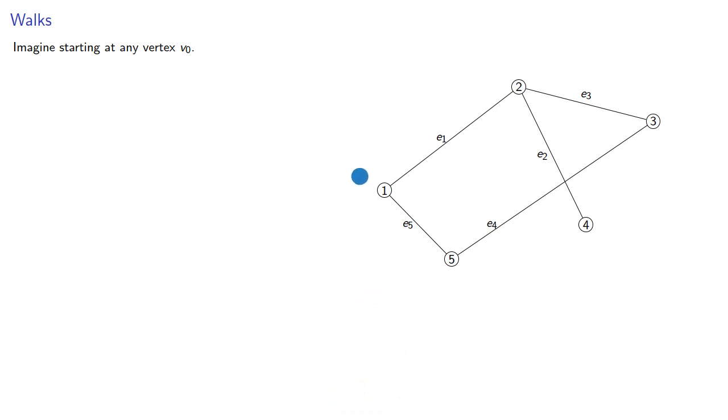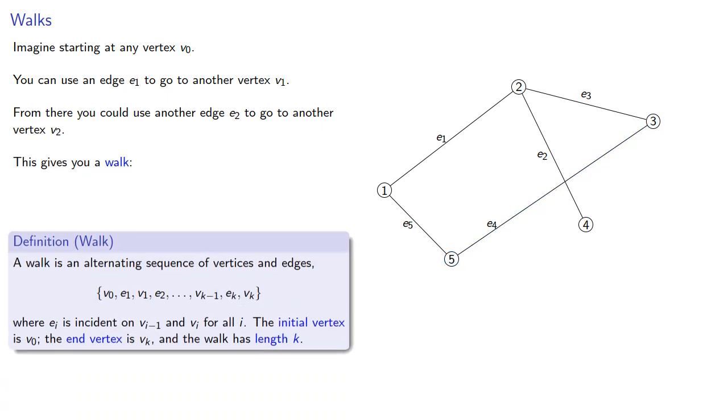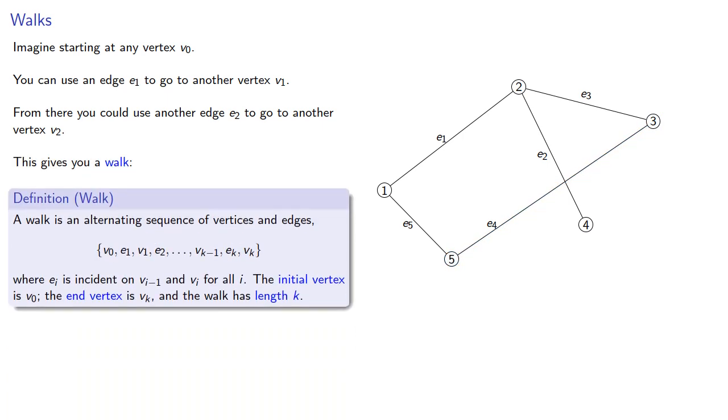Imagine starting at any vertex. You can use an edge to go to another vertex, from there you can use another edge to go to another vertex, and so on. This gives you a walk, an alternating sequence of vertices and edges, where each edge is incident on the vertex before and after it. The initial vertex is v0, the end vertex is vk, and the walk has length k.